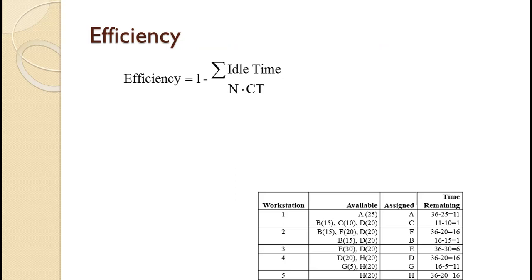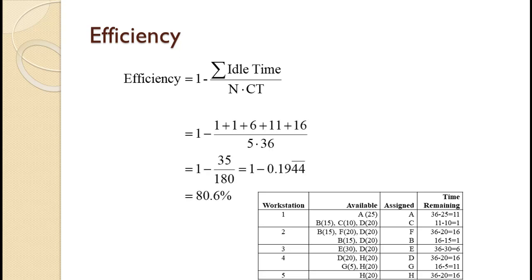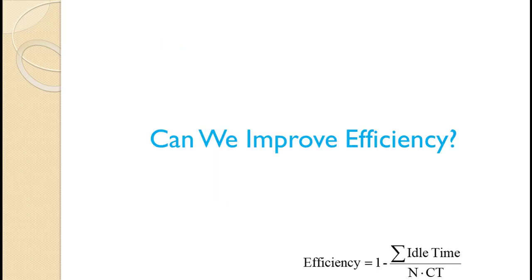Efficiency is calculated as 1 minus the sum of the idle times divided by the number of workstations used times the cycle time. The workstation idle times are 1+1+6+11+16 equals 35. Note that for workstations with more than one task assigned, we only use the last number for the time remaining. With 5 workstations and a cycle time of 36, the result is 80.6%. Since 5 was the theoretical minimum number of workstations, this is as good as we can do. Efficiency is only a function of the number of workstations used — every arrangement that required 5 workstations would have exactly the same efficiency.